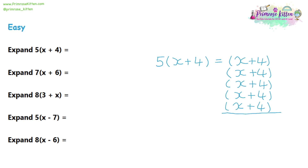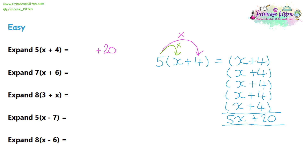If we add all of this up, x + x + x + x + x is 5x, and four plus four plus four plus four plus four is 20. So the expression 5(x + 4) is exactly the same as 5x + 20. But a faster way of doing it is to notice we've got five fours, and five multiplied by four is 20. We can just multiply the number on the outside of the bracket by the two numbers on the inside of the bracket to get the answer.